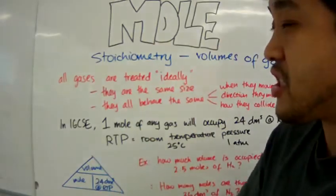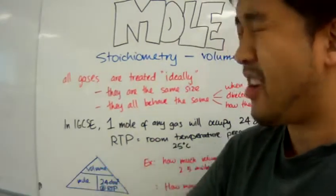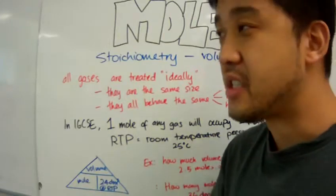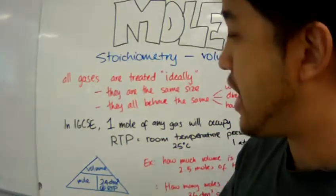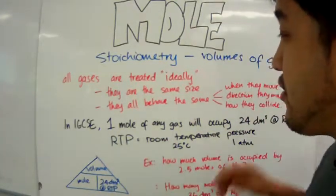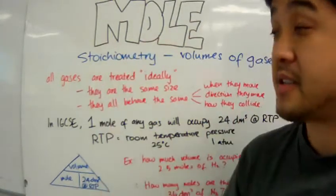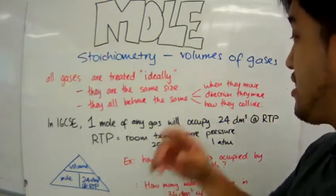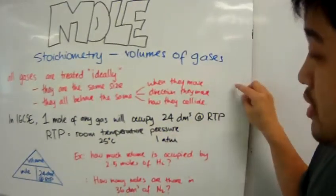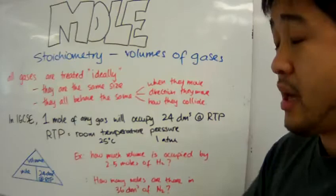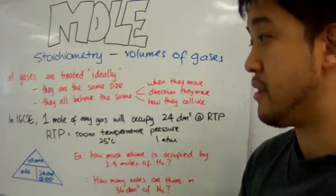Now in IGCSE as well as other curriculum all gases are treated ideally. That means they all have the particles that make up those gases are the same size and they all behave the same whether it's when they move, the direction they move, or how they collide.